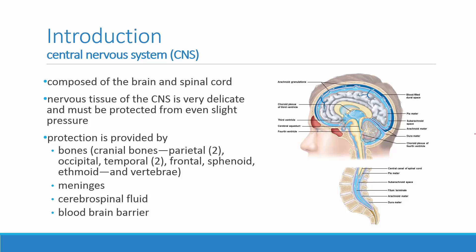The protection around the brain and spinal cord is composed of lots of bones: the two parietal bones, the occipital bone at the posterior, the temporal bones at the lateral sides of the skull, the frontal bone, the sphenoid, the ethmoid, and down around the spinal cord the vertebrae. But that's not the only protection — the meninges, layers of connective tissue, and the cerebrospinal fluid captured between the layers also protect and shield the brain and spinal cord from being jostled.